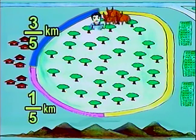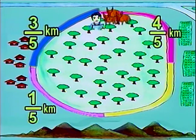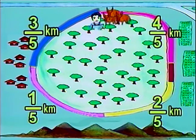On the other route, he will pass by a rice field. The riverside to the rice field is 4 fifths kilometer, and from the rice field to the hill is 2 fifths kilometer.